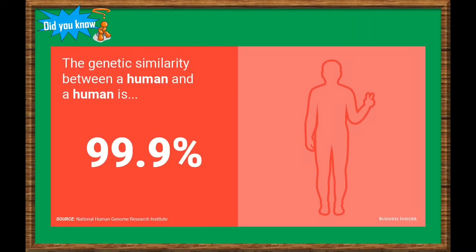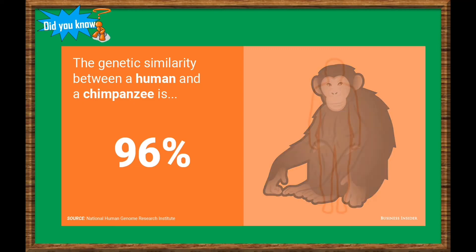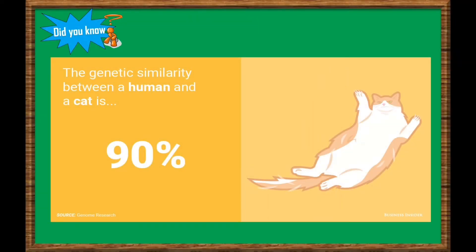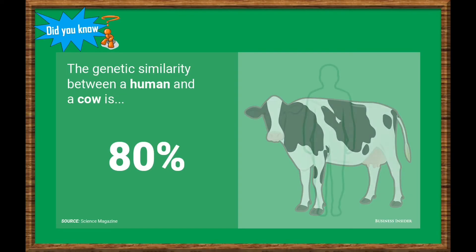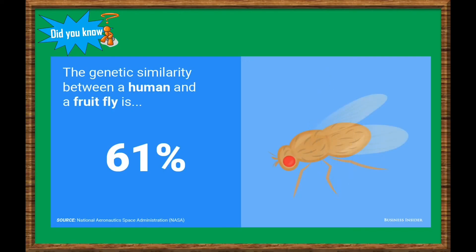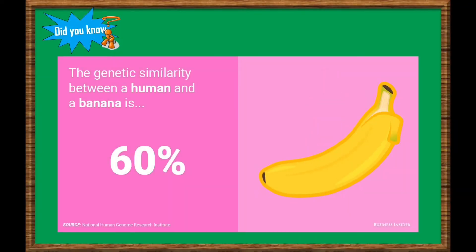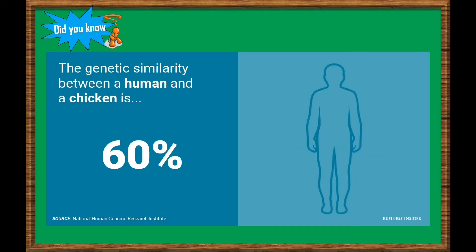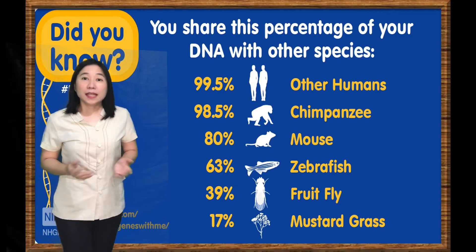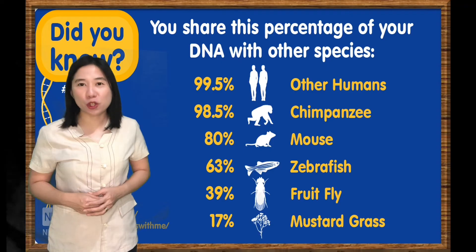The genetic similarity between a human and another human is 99.9%. Did you know that there is 96% genetic similarity between a human and a chimpanzee? The genetic similarity between a human and a cat is 90%, and between a human and a mouse is 85%. The genetic similarity between a human and a fruit fly is 61%. Talking about fruits, the genetic similarity between a human and a banana is 60%, and similarly between a human and a chicken is 60%. It's amazing how much similarity we have with other organisms through our genes or the arrangement of our DNA.